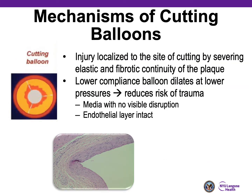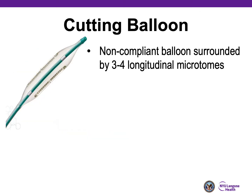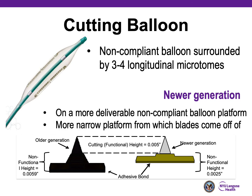The mechanism of the cutting balloon is that it creates injury localized to the site of cutting by severing the elastic and fibrotic continuity of the plaque. These are lower-compliant balloons that dilate at lower pressures, and there is a reduced risk of trauma. In pathology, you can see there is no visible disruption of the media and the endothelial layer is intact, but you can create cracks in the calcium to allow balloon expansion with a non-compliant balloon at high atmospheres. The cutting balloon is a non-compliant balloon surrounded by three to four longitudinal microtomes. Newer generation balloons have the same functional height with blades but on a narrower platform to increase deliverability.